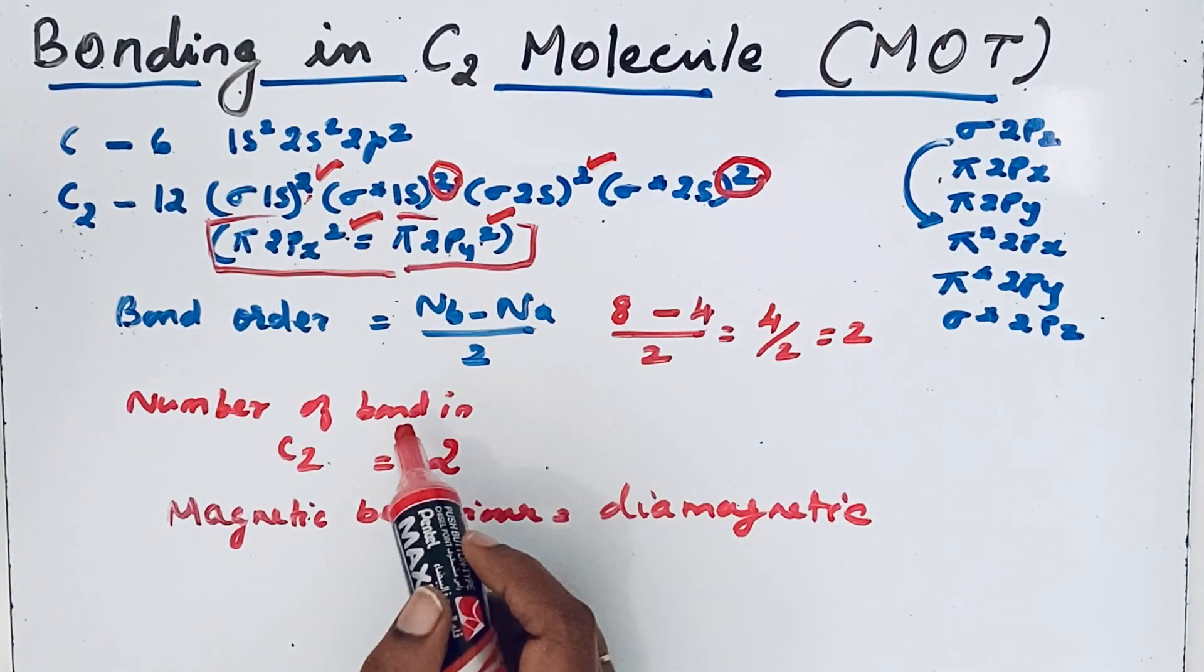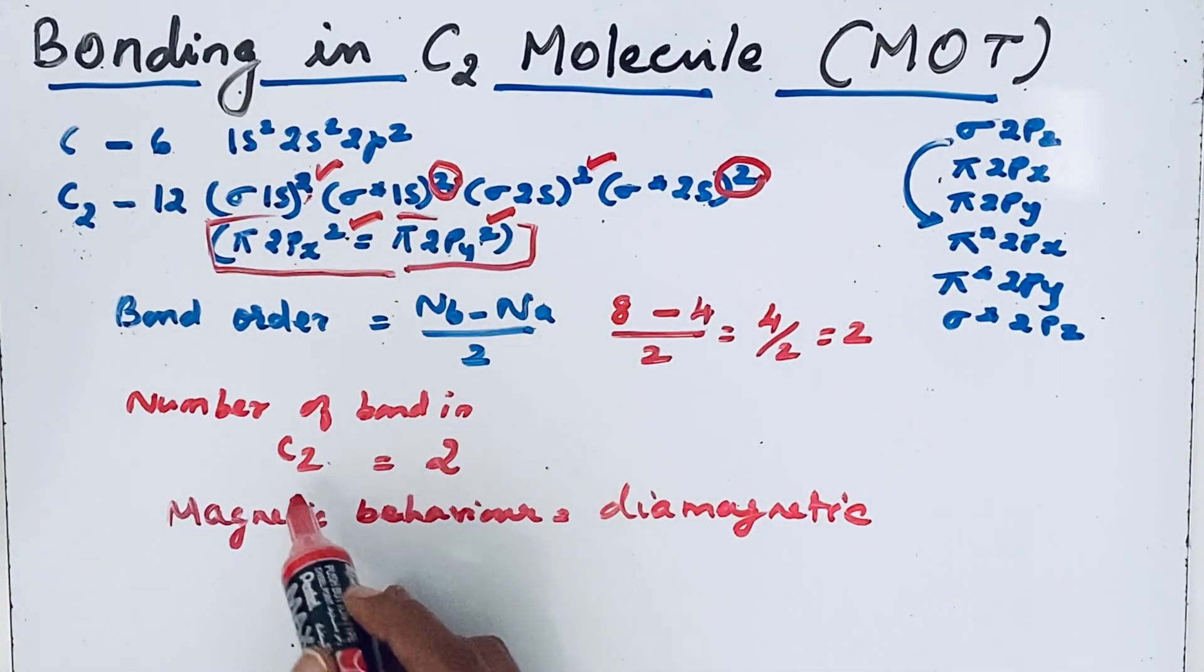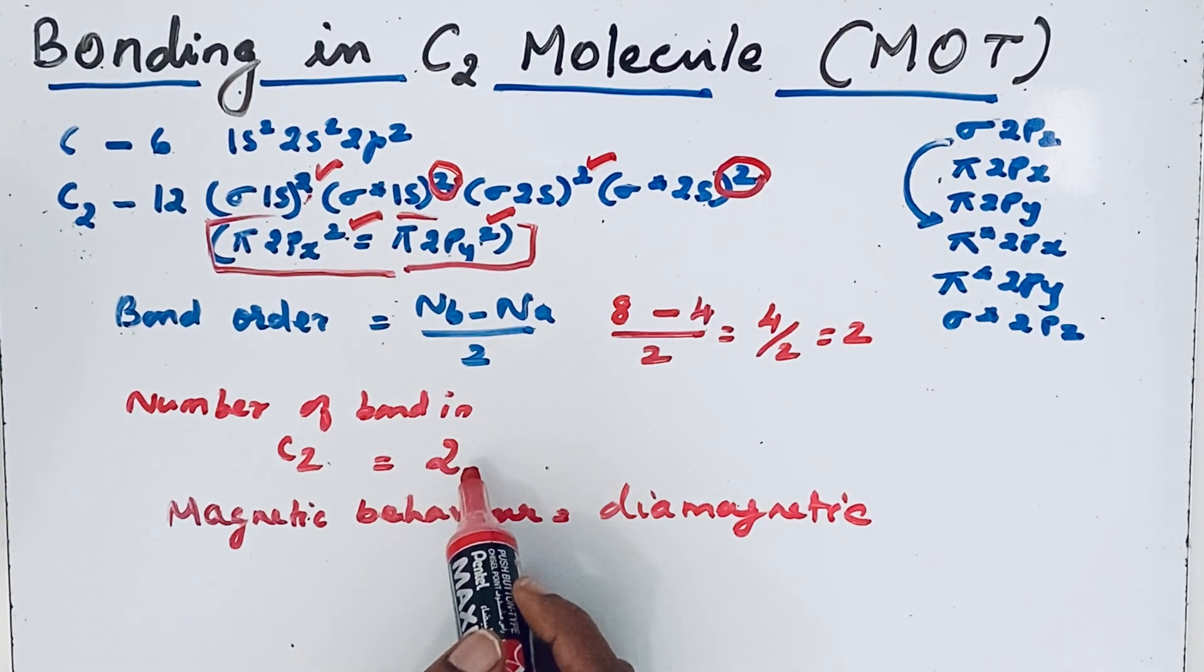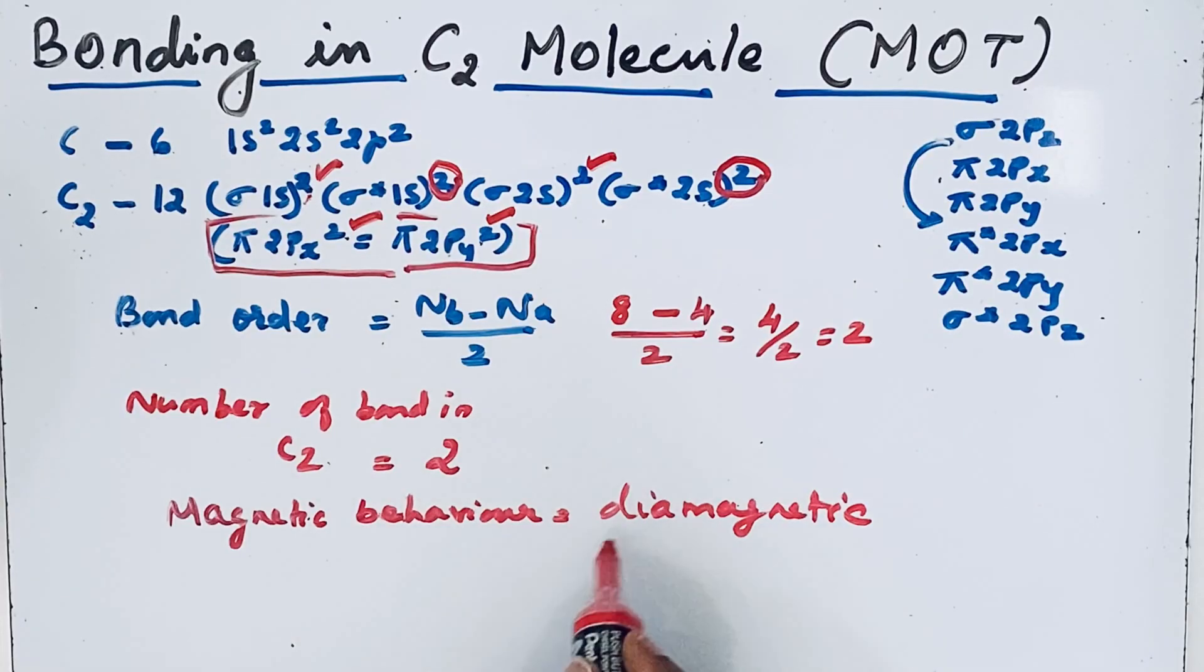The C2 molecule bond order is 2, and the number of bonds in C2 molecule is 2. But these both are from pi bonds. The magnetic behavior is diamagnetic.